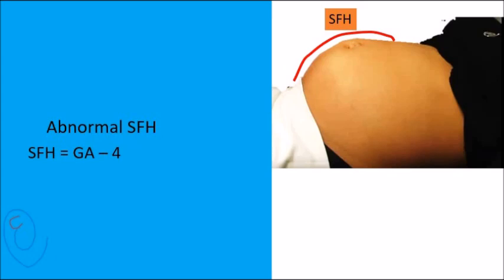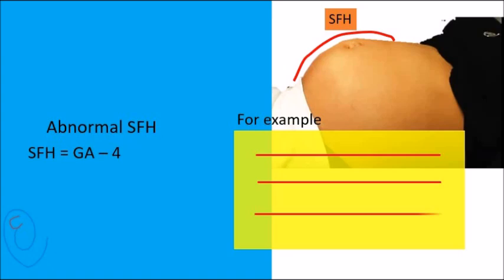The second method is simple and practical. A small fetus is suspected if the SFH is 4 centimeters or more less than gestational age. For example, when SFH is 28 centimeters at 32 weeks.